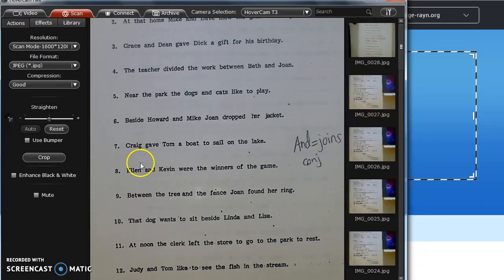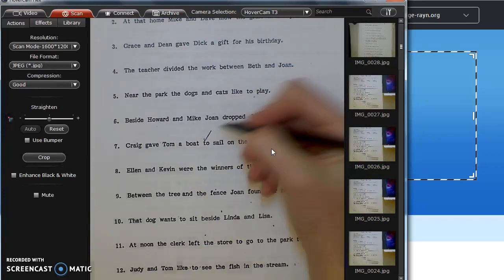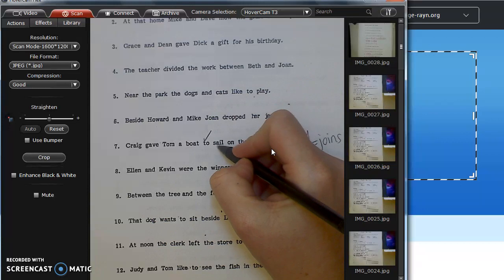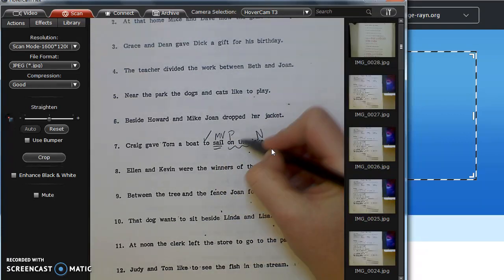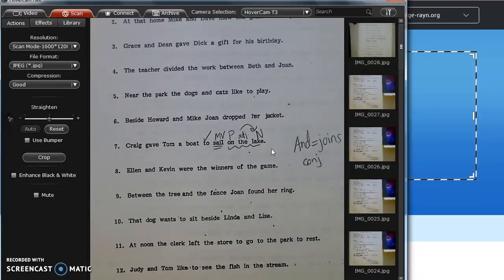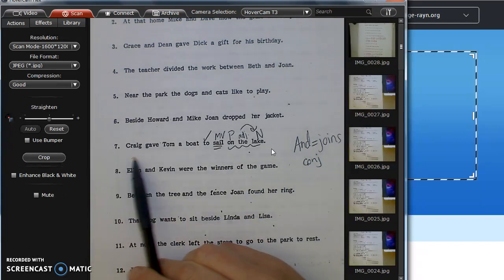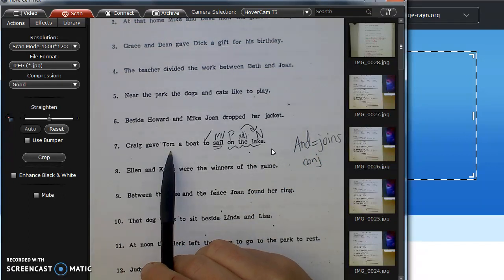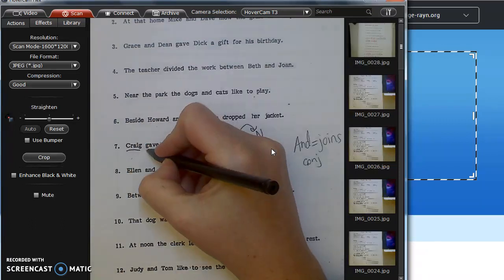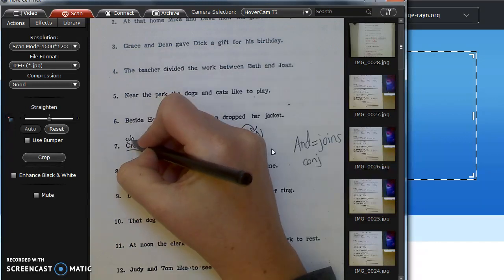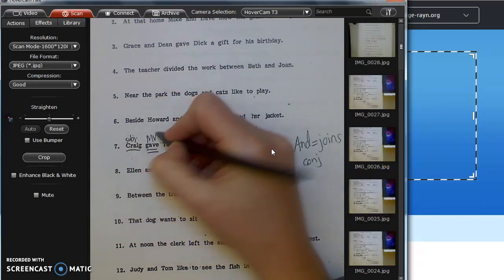Alright, so number 7, Craig gave Tom a boat to sail on the lake. The first thing we always do is check our two. Sail is a verb in this case, so we're going to double underline it and put M-V above it. Where is he sailing? On the lake. First word's a preposition, last word's a noun, anything in the middle is an adjective, don't forget your arrow. Who or what is doing the action? So we have Craig and we have Tom. Which one is doing the action? The person doing the action is Craig, because Craig is the one who gave. Craig is my subject and gave is my main verb.